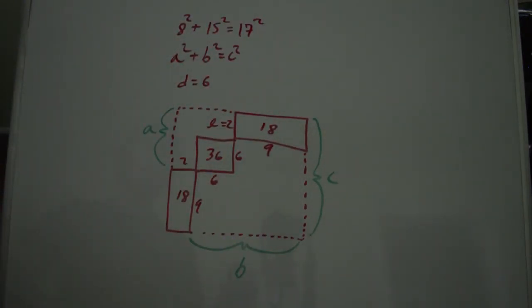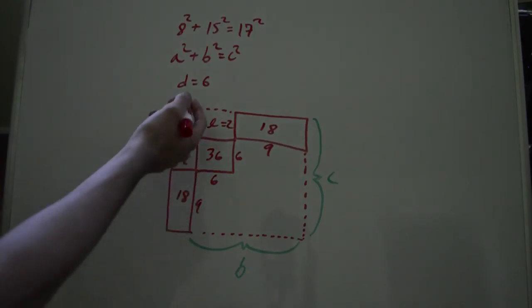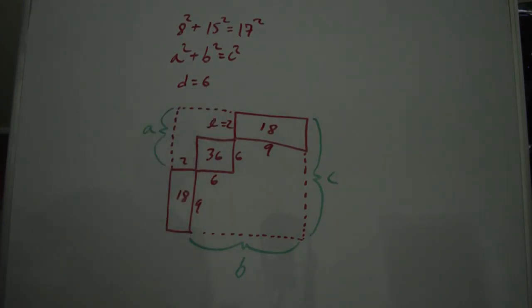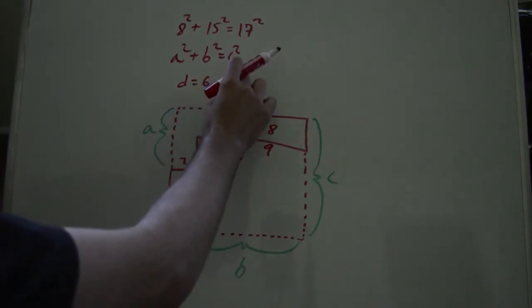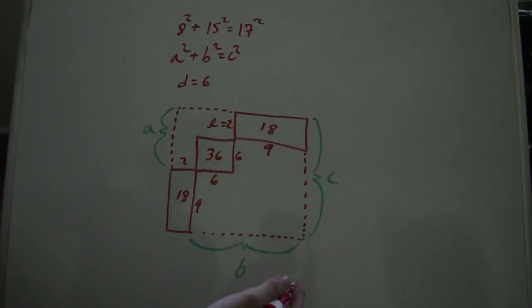And this means that you can take any number d that's even, because you need an even times an even to get another even number here that can be divided into 2 and not have fractional results. And you can generate Pythagorean triples using it.